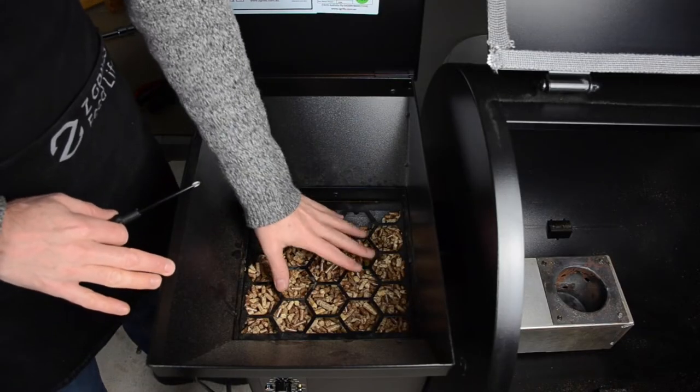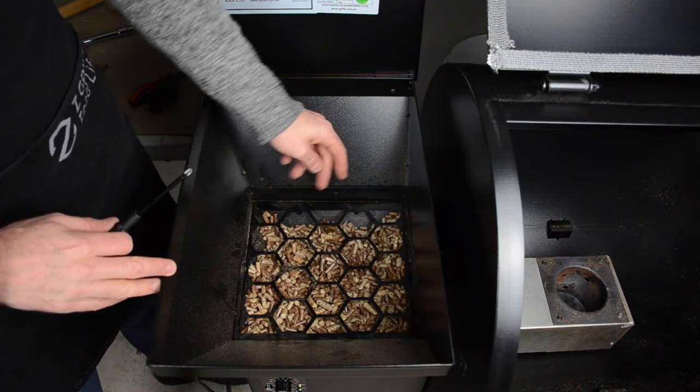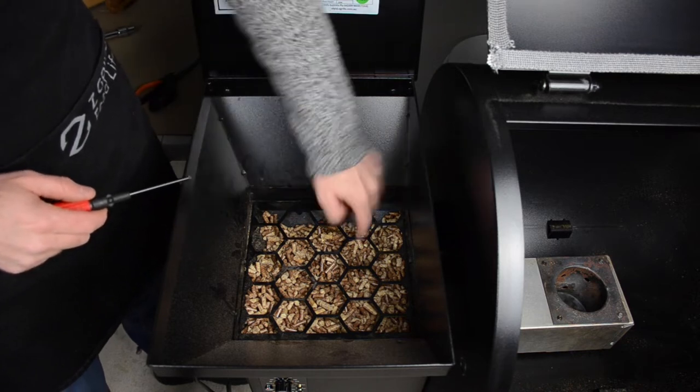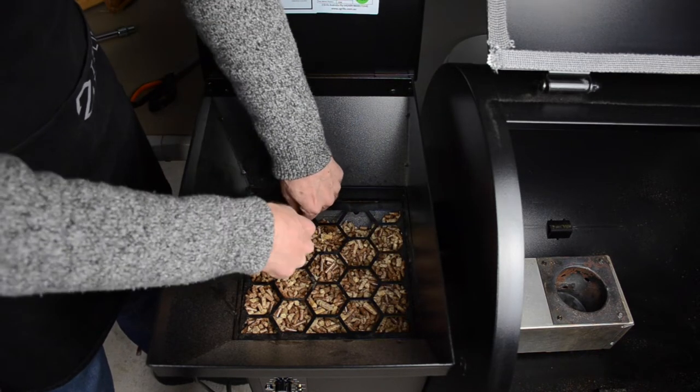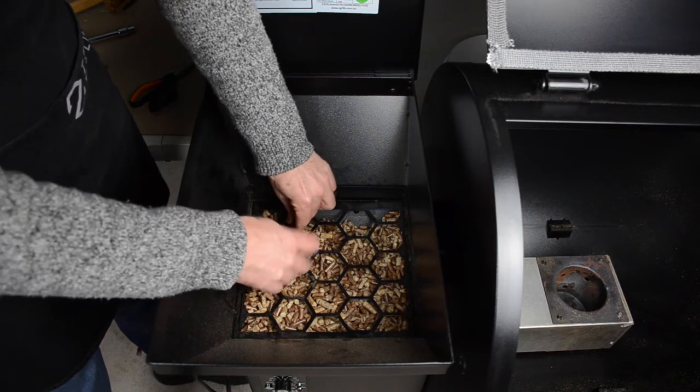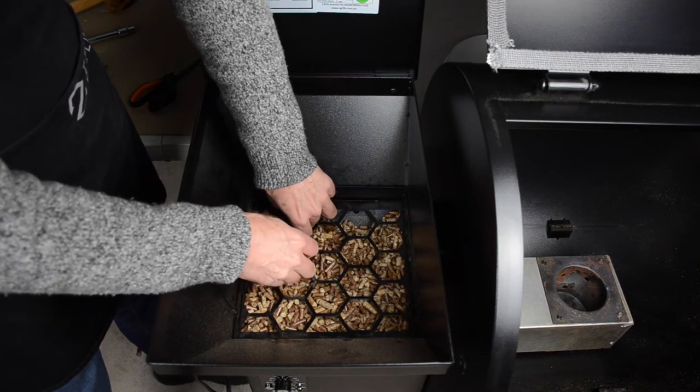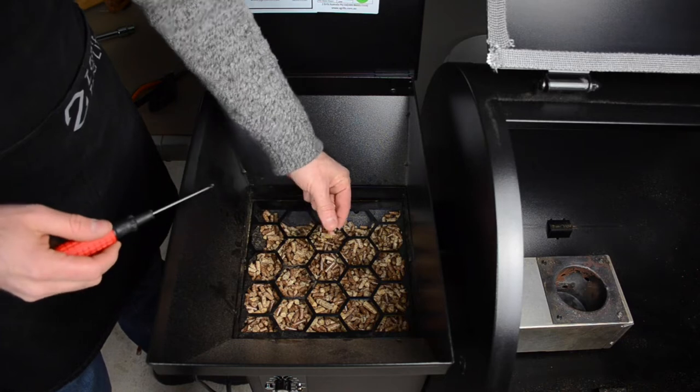Now you've got this protective grate here. It's probably a good idea to temporarily remove this. There's one, two, three, four screws depending on your grill model underneath the lip here so you can just get in here with your Phillips head screwdriver and remove these. Just avoid dropping them down and losing them inside the pellets.